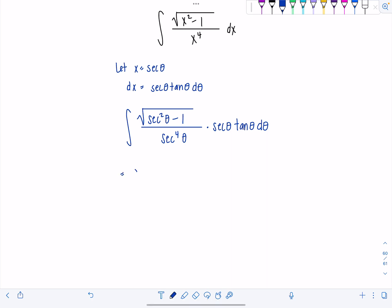Now notice, underneath the radical, this is the beauty of the trig sub. This is when it all comes together. Secant squared theta minus 1, that's tangent squared theta. So I have square root tan squared theta. I can cancel out this secant theta with one of the secants in the denominator. So now I just have secant cubed theta. And then 1 tan theta is left over, d theta.